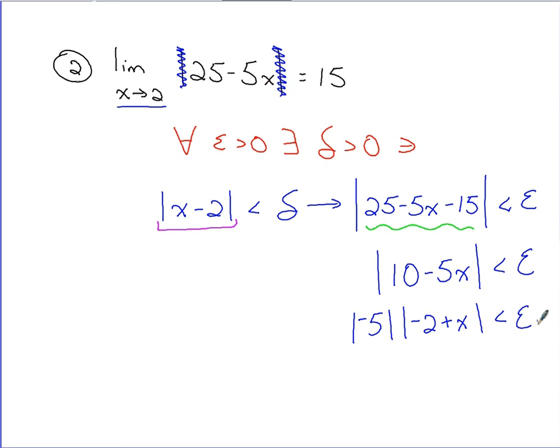At which point, if I do some cleaning up, the absolute value of negative 5, of course, is 5. If I reshuffle these terms, it would be x minus 2 inside the absolute value. Keeping in mind where I'm trying to get to, I want to get x minus 2 by itself, so divide the 5 over. So we've got the absolute value of x minus 2 less than epsilon over 5.